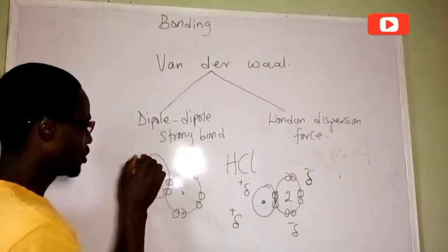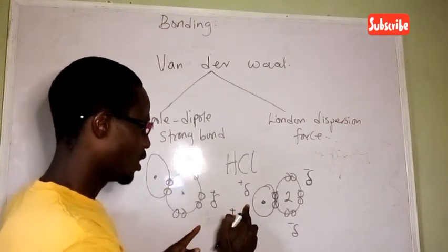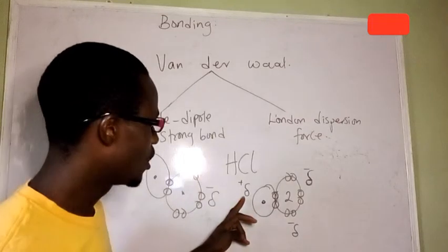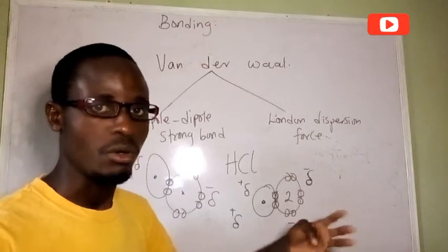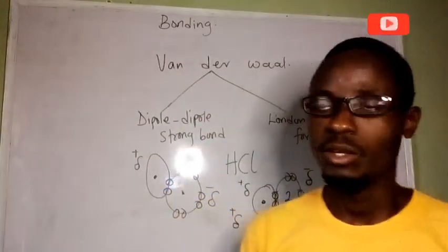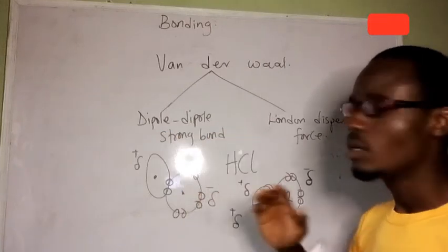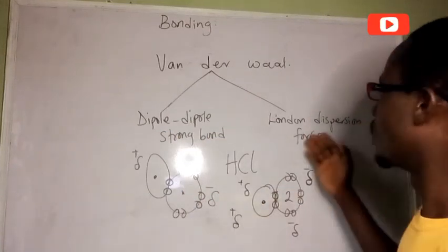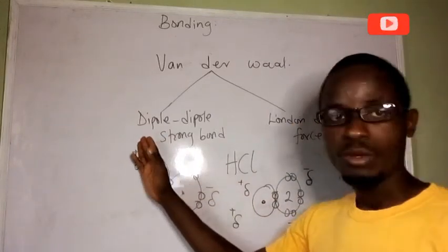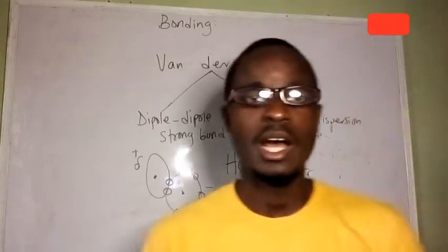We also have the London dispersion force. The London dispersion force is temporary, while the dipole-to-dipole force is permanent. They act in a similar way — both form positive and negative dipoles — but the dipole-to-dipole force is permanent and stronger, while the London dispersion force is weaker and temporary. That is how these intermolecular forces act to join molecules together.